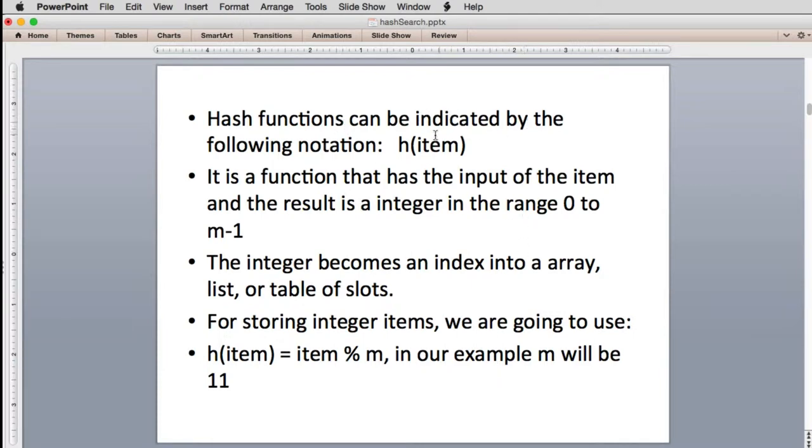So hash functions are usually written with the letter H as notation and then you give the item inside. So H and then parentheses item. It is a hash function that has the input of the item and the result is an integer in the range from 0 to m-1. And we're actually going to use the result of the hash function number to look up in a table or a list and the list will be m long. So that's what the m refers to. So we're going to pass some piece of data through the hash function. It returns a number and that number will index into our list. And the list will be size m so the very last index will be m-1. The integer becomes an index into an array, list, or some kind of table of slots.